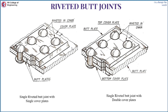In a butt joint, the plates to be joined are placed adjacent to each other — not above or below — and a cover plate is placed above them. This cover plate holds the rivets and the butt plates together. On each butt plate there is one row of rivets, so it's called a single riveted butt joint with single cover plate. We can also have a double cover plate — one on top and one at the bottom — with one row of rivets on each butt plate, giving a single riveted butt joint with double cover plate.